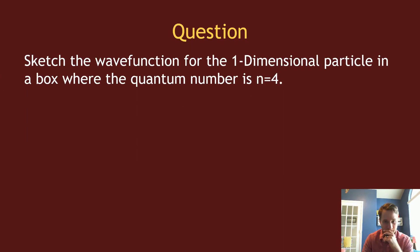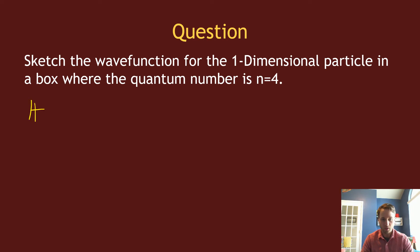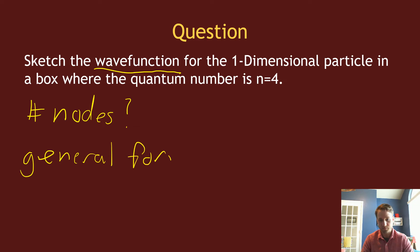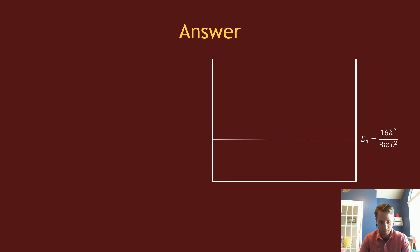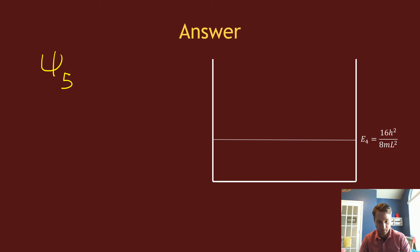The next question is to sketch the wave function for a one-dimensional particle in a box with quantum number n = 4. To sketch this, we need to know the number of nodes and the general form of the wave function. The number of nodes for a particle in a box is n − 1, and the general form is a sine function.